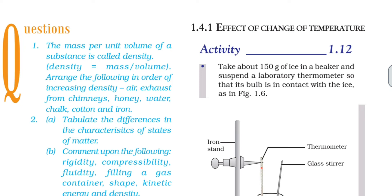Density means mass per unit volume of a substance. The correct increasing order of density is: smoke from chimneys, cotton, water, honey, chalk, and iron.